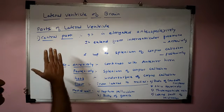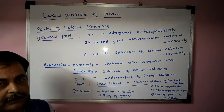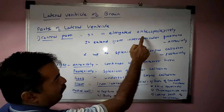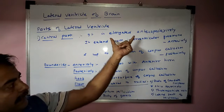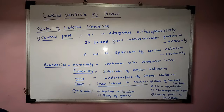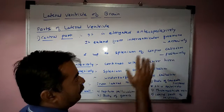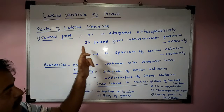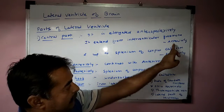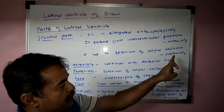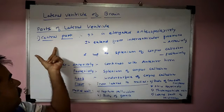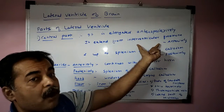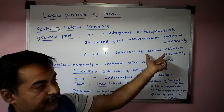The first part of the lateral ventricle is the central part. This central part is elongated anteroposteriorly, extending from the interventricular foramina or foramen of Munro anteriorly, up to the splenium of the corpus callosum posteriorly. The lateral ventricle lies below the corpus callosum, on its under surface.